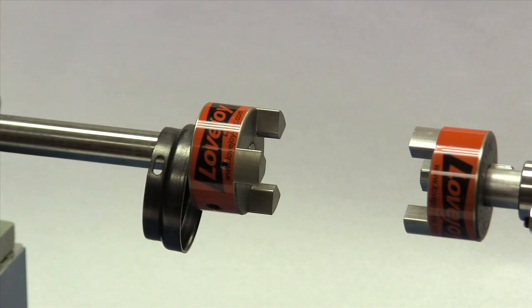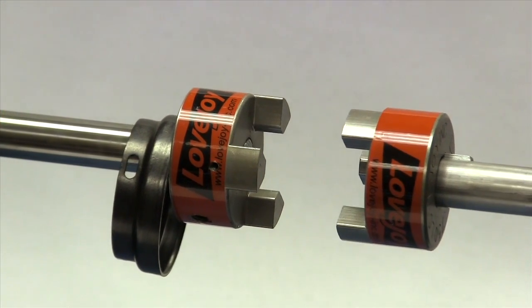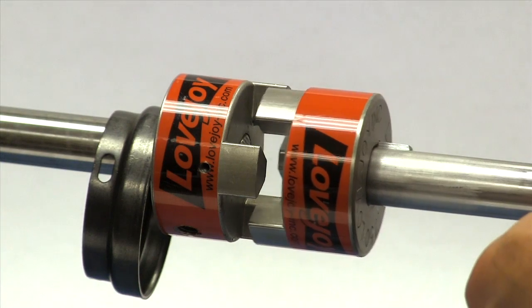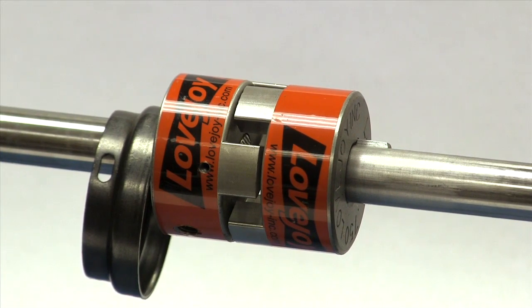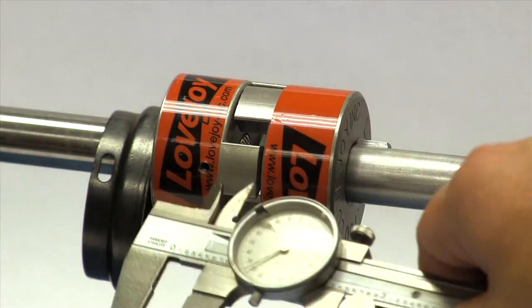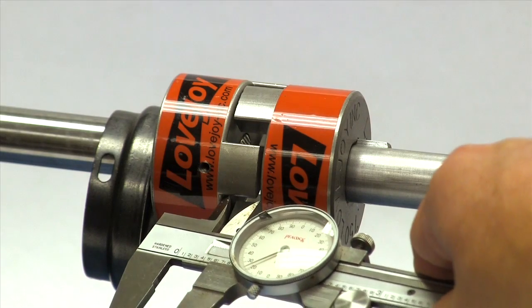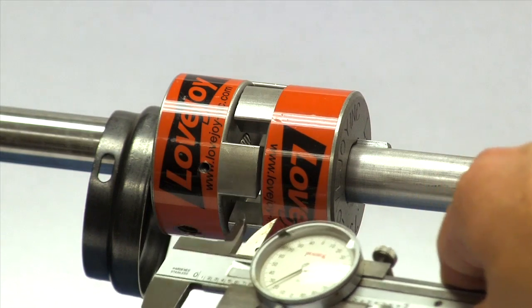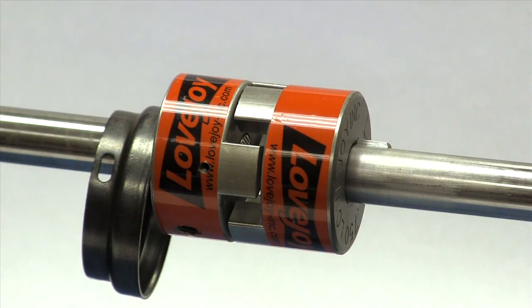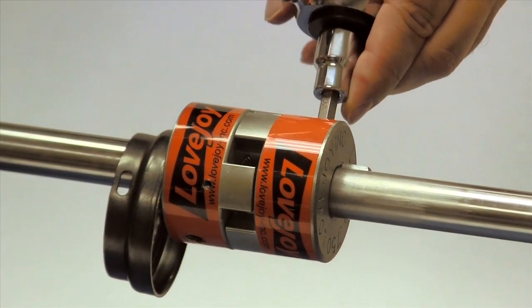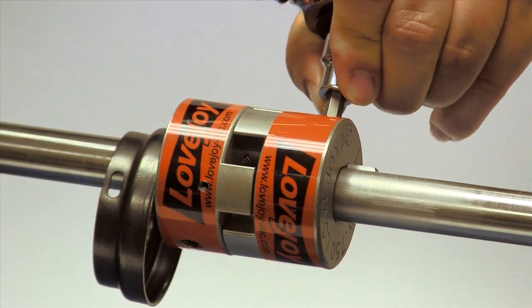Now we will carefully move the equipment into place bringing the hubs together until the gap between the hub faces matches the G or gap dimension in the installation guide. This dimension should match the installation document within plus or minus one sixty-fourth of an inch. Tighten the set screw in the second hub to the specified torque value.